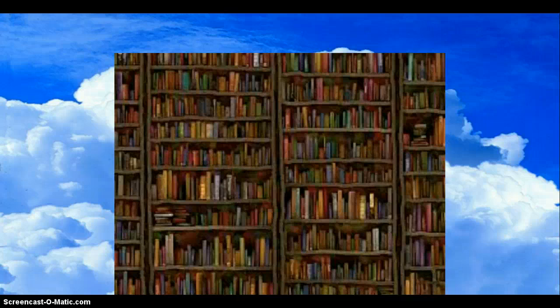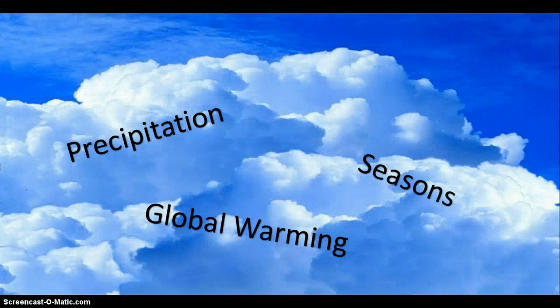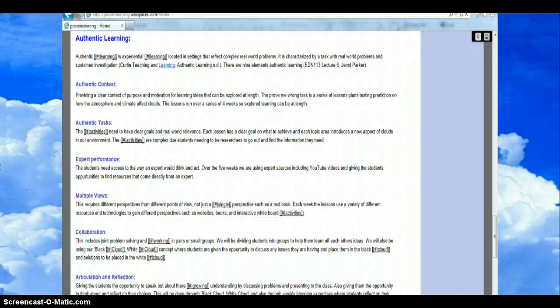We then looked through the curriculum and chose grade five to six. We chose the topic area of clouds and how they affected and are affected by precipitation, seasons and global warming. We divided it into five weeks and split the first four weeks evenly between us. Amanda took 'what are clouds,' Darius took precipitation, Ash took the seasons, and Courtney took global warming. We set out a basic lesson-by-lesson outline and went away to elaborate on our plan. We also established all our authentic learning elements.